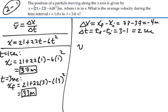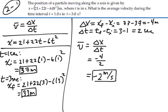So our average velocity, displacement over time, is negative 4 divided by 2, or negative 2 meters per second. So that's one way to do the problem. I'll show you another way in another video.